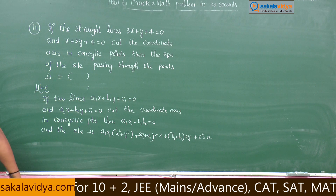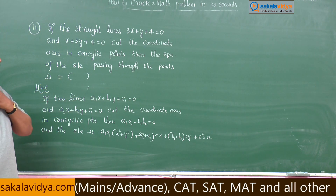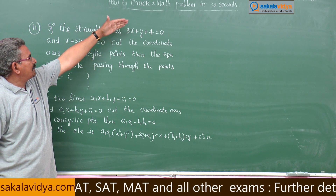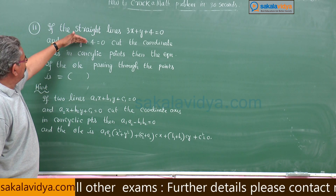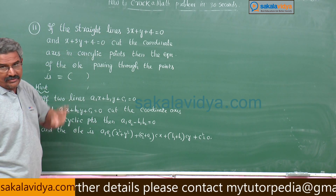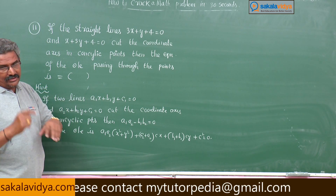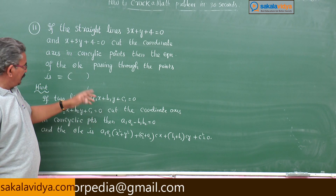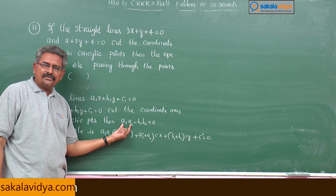This is the formula you have to remember. Sometimes, if the straight lines a1x plus b1y plus c1 equals 0 and a2x plus b2y plus c2 equals 0 cut the coordinate axis in concyclic points and you need to find missing values, this condition a1a2 minus b1b2 equals 0 has to be applied.